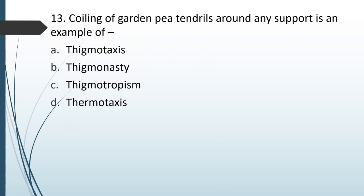Coiling of garden pea tendrils around any support is an example of: (A) thigmotaxis; (B) thigmonasty; (C) thigmotropism; (D) thermotaxis. The correct answer is option C — thigmotropism.